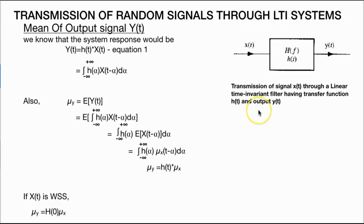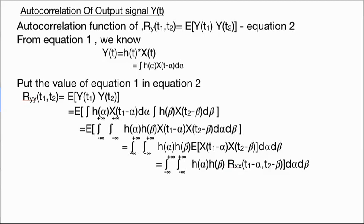You can see in this box what actually an LTI system does to an input x(t) system. Moving on with the next property, that is autocorrelation of output signal. Here, I have calculated, pause for a minute and check it out.